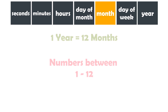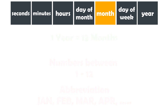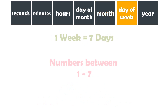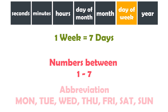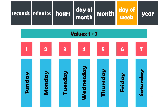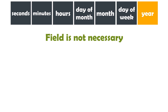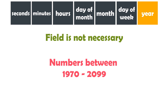Month field: either the numbers 1 to 12, or the abbreviations for the months, such as Jan for January, Feb for February, etc., can be entered in this field. Day of the week field: either the numbers 1 to 7 can be entered here, or the abbreviations for the days, such as Mon for Monday, Wed for Wednesday, etc. If you want to work with numbers, 1 stands for Sunday, 2 for Monday, 3 for Tuesday, etc. The last field is year — as already mentioned, this field is not necessary. Numbers between 1970 and 2099 can be entered in this field.